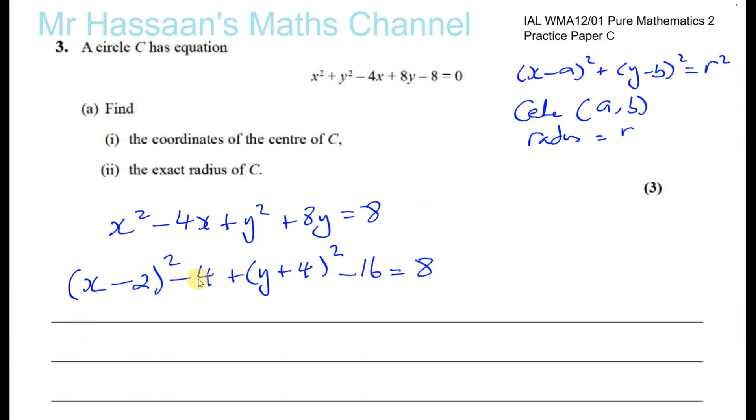So that gives me minus 16 equals 8. I want to get rid of these constants. This is like minus 20, so I'll add 20 to both sides. So I'll have x minus 2 squared plus y plus 4 squared is equal to 8 plus 20, which is 28.